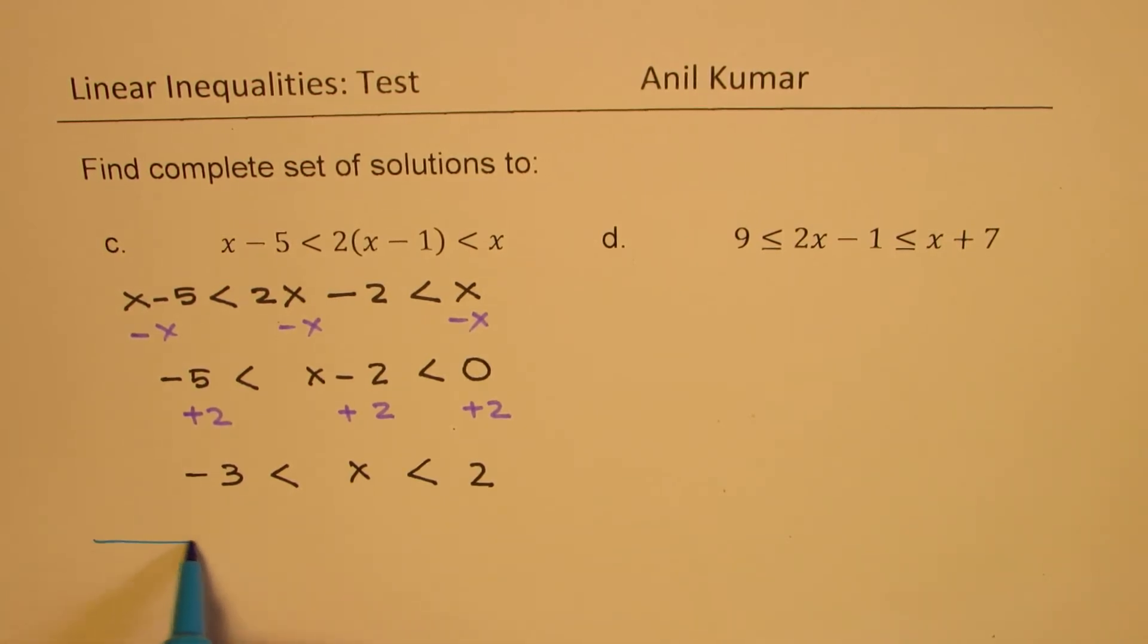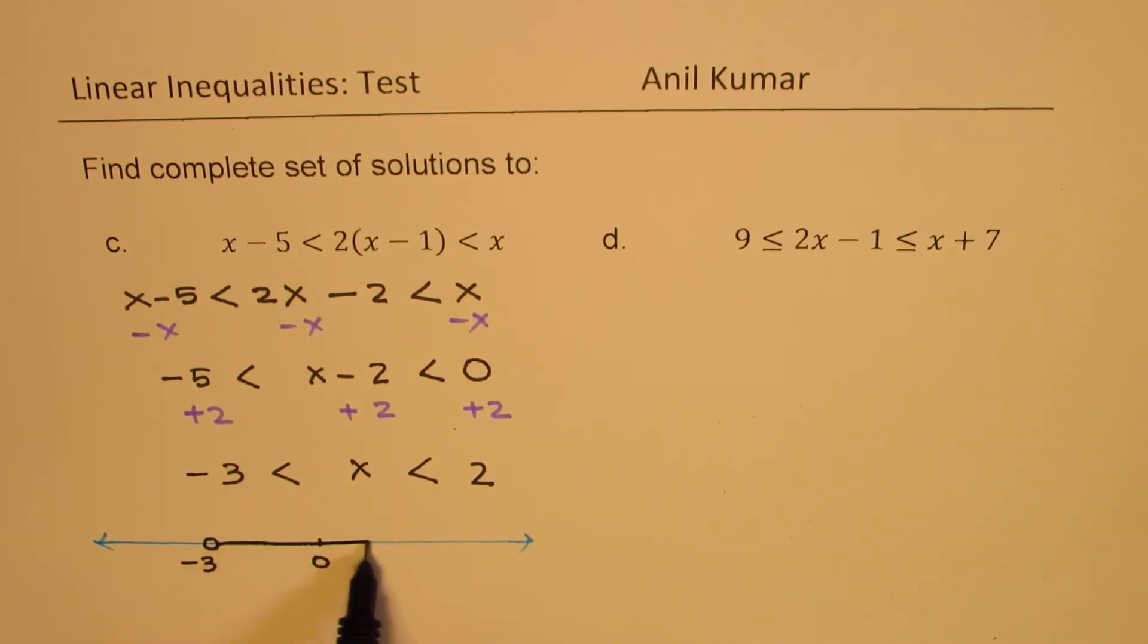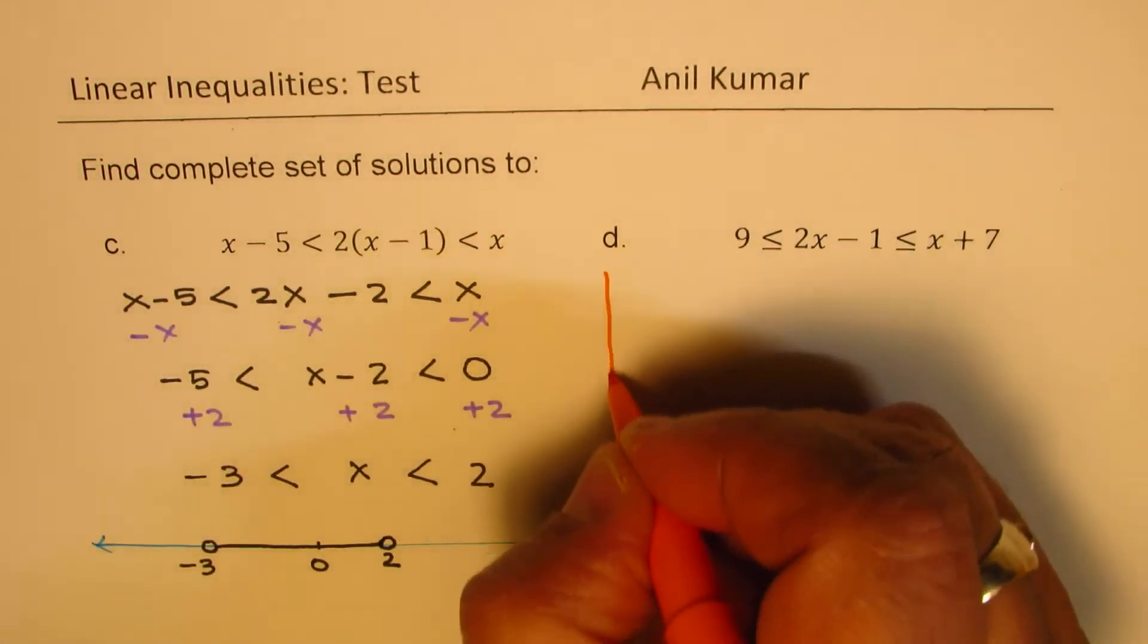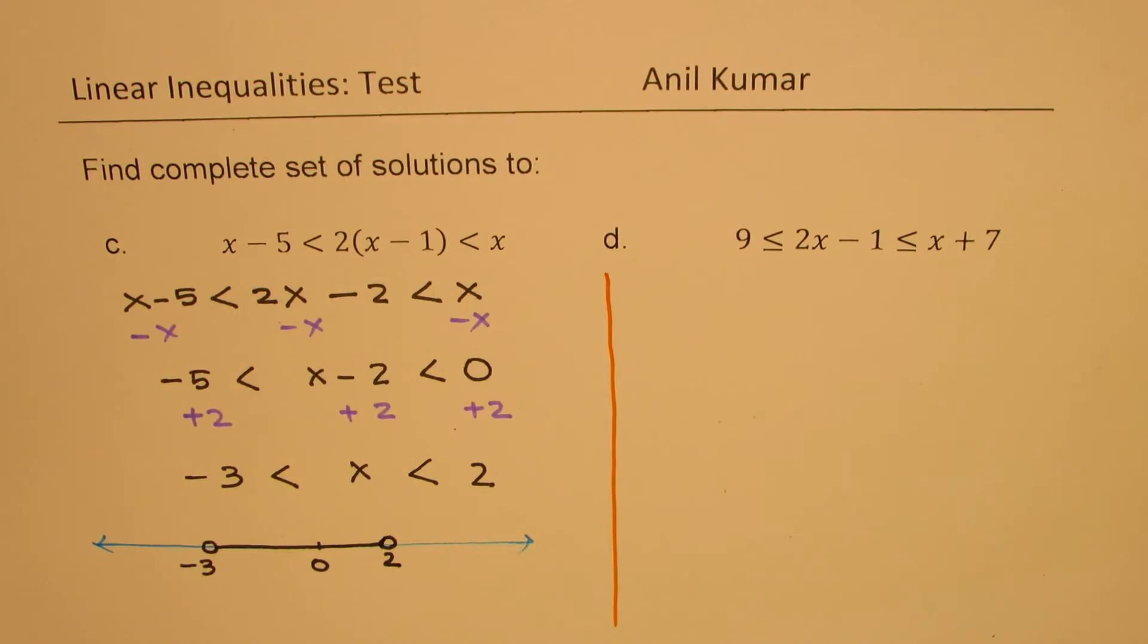Sometimes you may have to show the answer on a number line. So let me also do that here. So let's say we have a number line. In this particular case the solution for us is, let's say 0 is within the solution. Here we have minus 3, open circle means not included, and then up to 2, again open circle since both are not included. So that is how you could also represent the answer on number line.